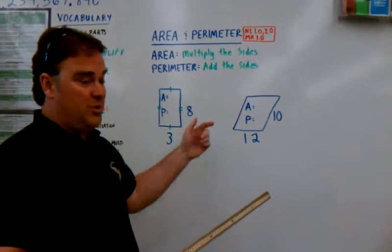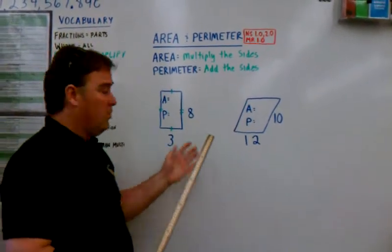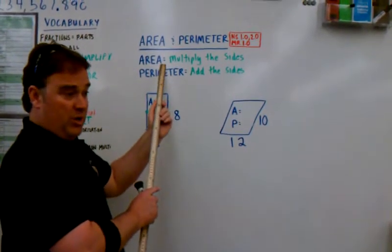Now, these are both quadrilaterals because they have four sides. Let's take a look at this one right here. We see that, let's do the area first. Now remember, area again is?